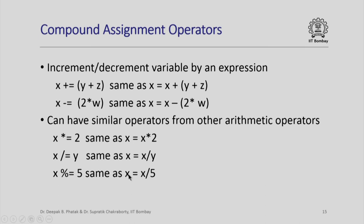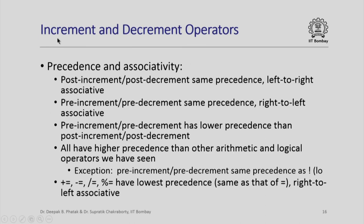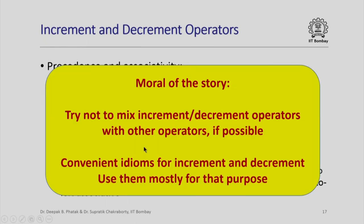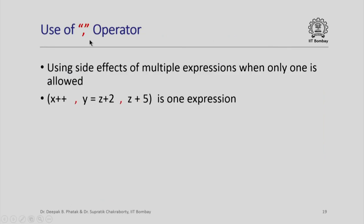With so many kinds of assignment, increment, and decrement operators, we need to worry about their precedence and associativity. This is taken from the C++ standard and involves complex rules about relative precedences and left-to-right or right-to-left associativity. The moral of the story is: try not to mix increment and decrement operators with other operators if possible. The precedences and associativities are quite complex; these operators are provided as convenient idioms for incrementing and decrementing, so use them mostly for that purpose.